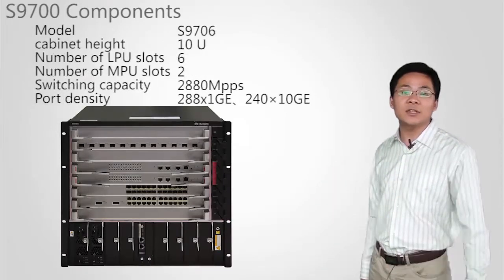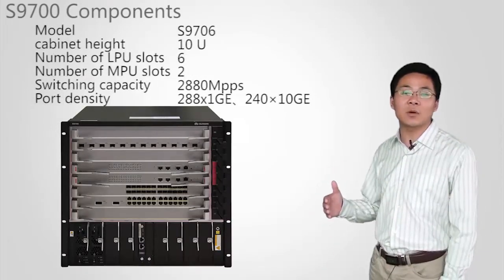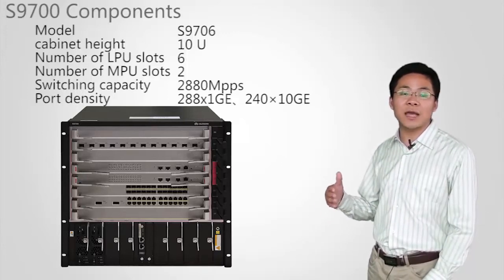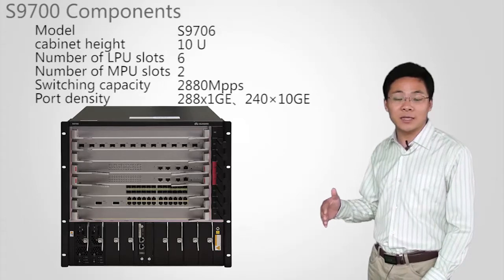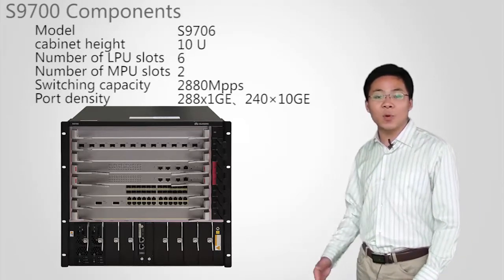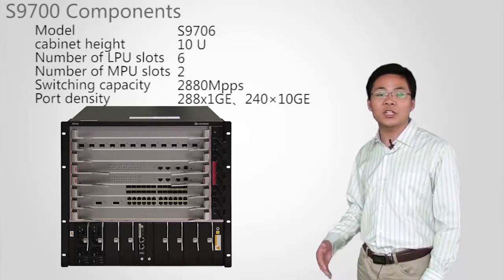S9706 is 10U high and has six LPU slots, two MPU slots, and a switching capacity of 2880 MPPS. It supports a maximum of 288 GE ports and 240 10GE ports.